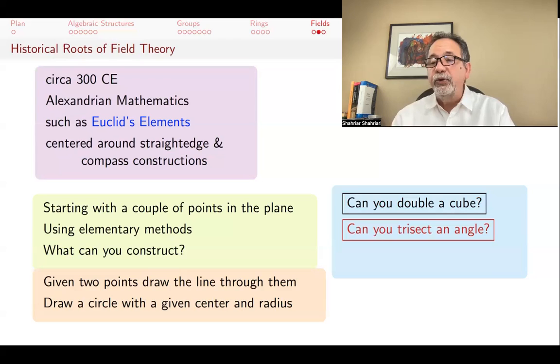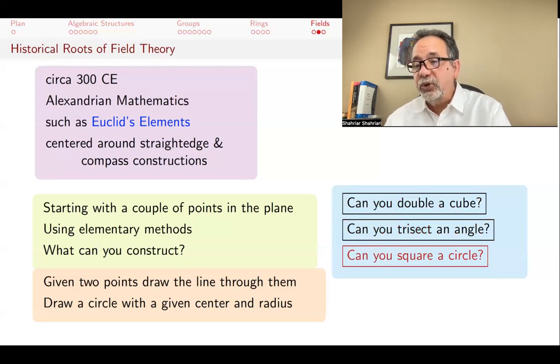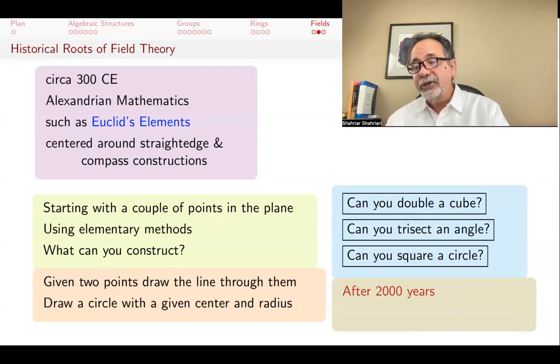Can you trisect an angle? If I give you an angle, if I draw an angle for you, can you draw a line that will divide the angle into three equal parts? Can you square a circle? If I give you a circle, can you draw a square so that the area of the square is the same as the area of the circle? All of these questions bothered humanity for a good 2,000 years.